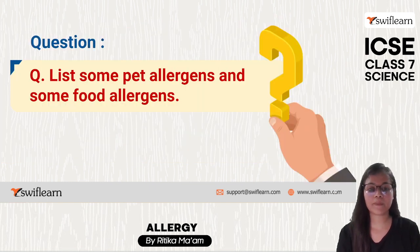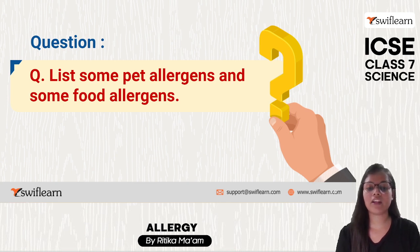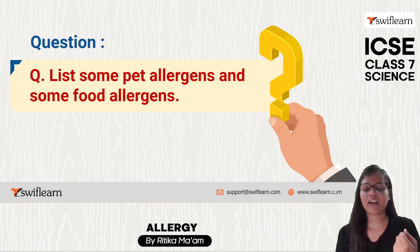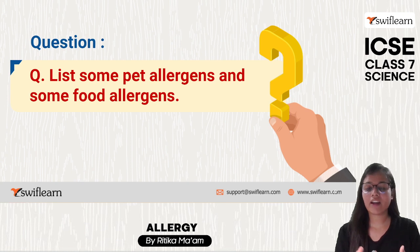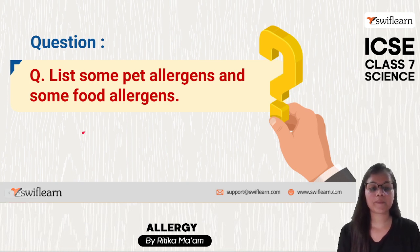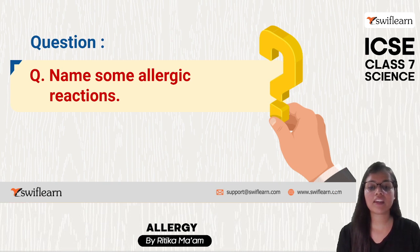Question one: list some pet allergens and some food allergens. Pet allergens include hair of dog, cat, rabbit, and some insects. Food allergens include milk, meat, or eggs. Name some allergic reactions: fever, sneezing, wheezing, coughing, and shortness of breath.